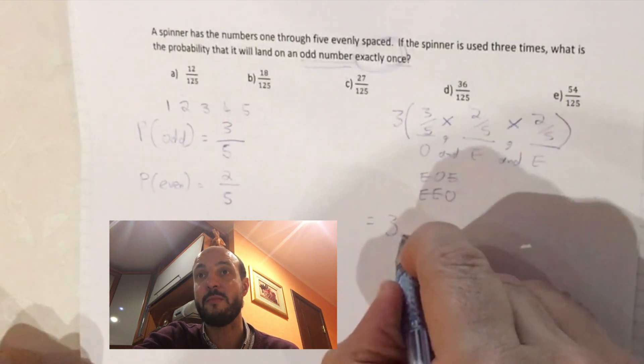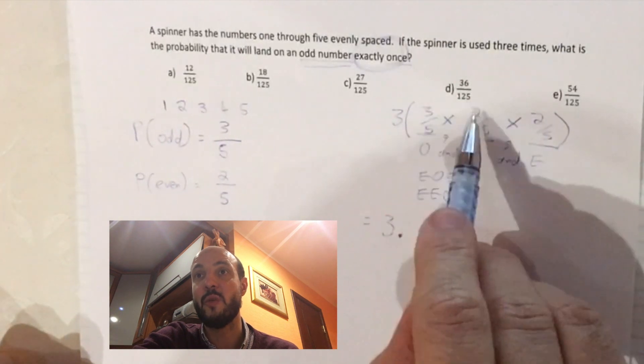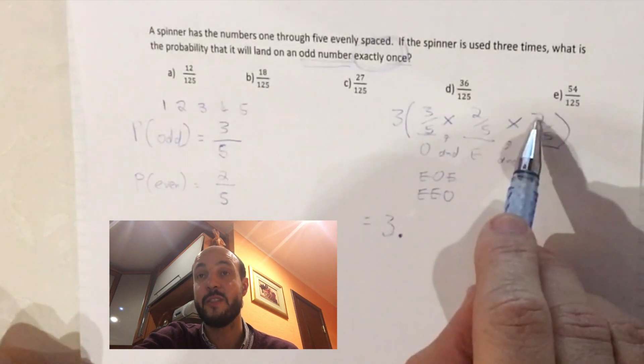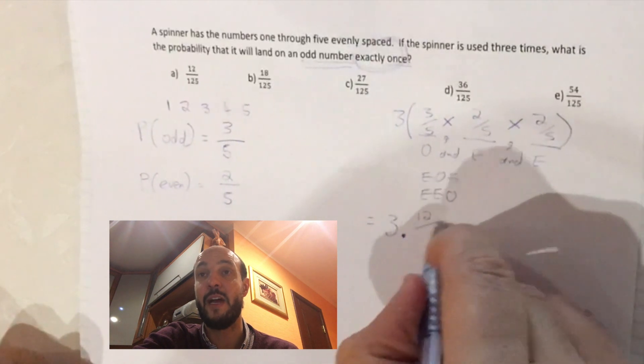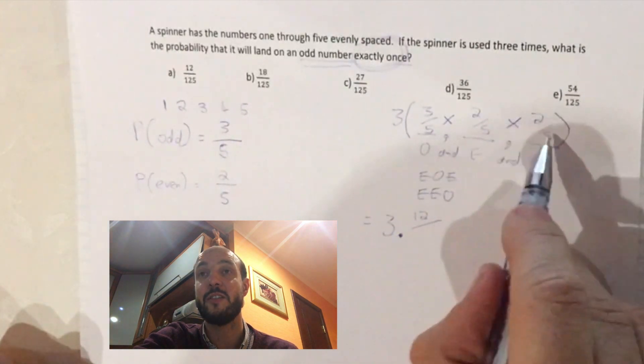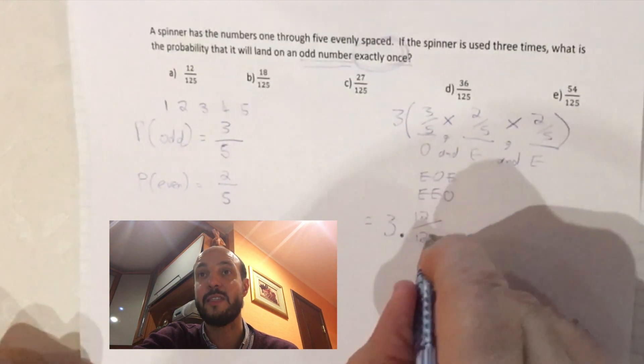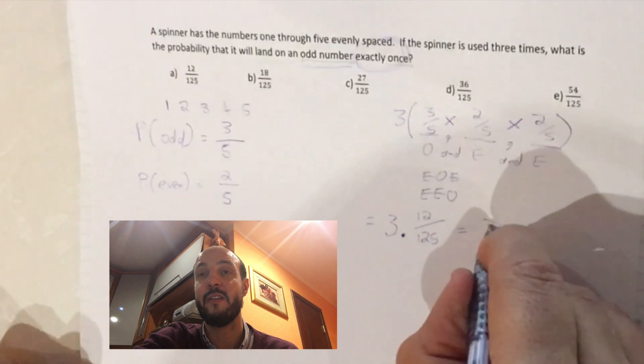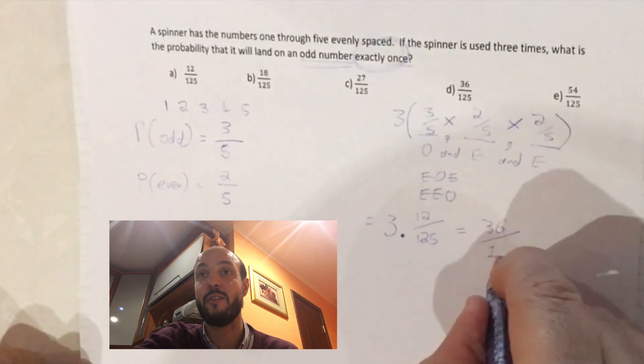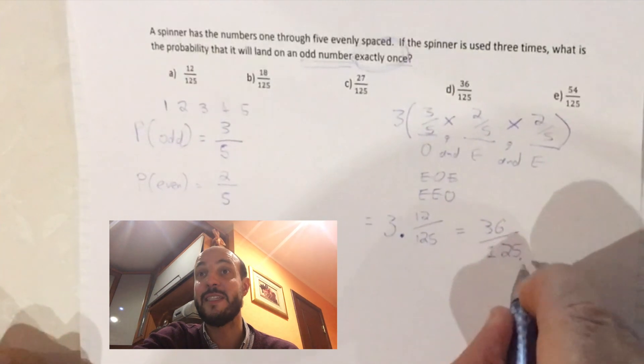So we've got 3 times 3 times 2 is 6, times 2 is 12. And then 5 times 5 is 25, times 5 is 125. So we've got 3 times 12 over 125, which is 36 over 125. QED.